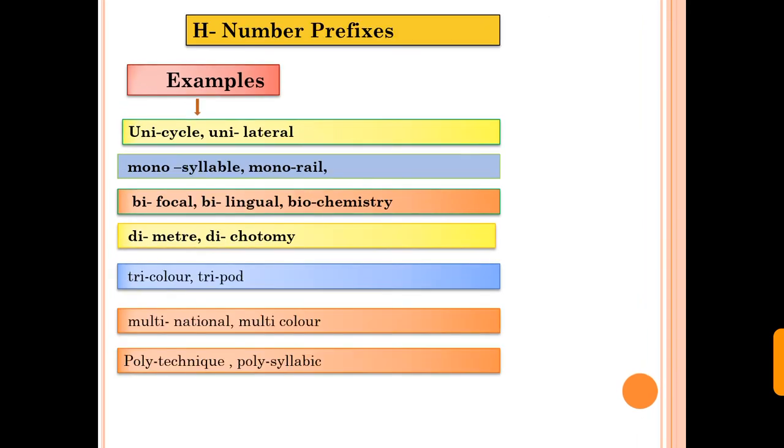Now the last one is number prefixes. It shows the number. Uni shows the one number. Mono shows the many number. Bi shows the two number. Di shows the various type. Tri shows the three number. Multi and poly show also many or much number. Examples: cycle, unicycle, monosyllable, focal, bifocal, meter, diameter, color, tricolor, multinational, multicolor, polytechnic. These are the types of prefixes.